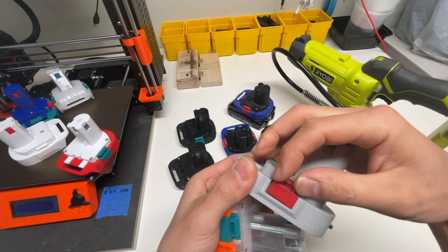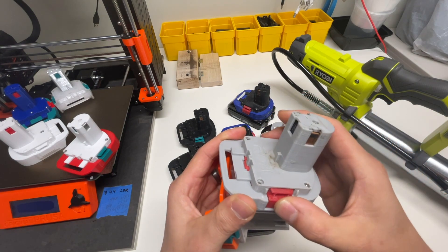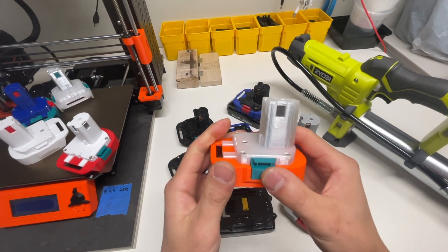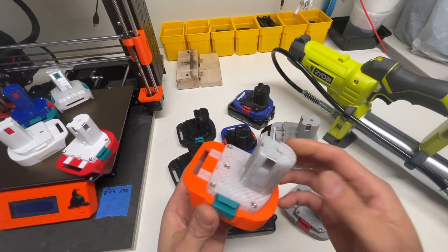And then I tightened the tolerances so it gets rid of all the slop in the original design. So these clips for example there's a lot of play in the movement. So now it's much tighter. So now let me show you how I make these.